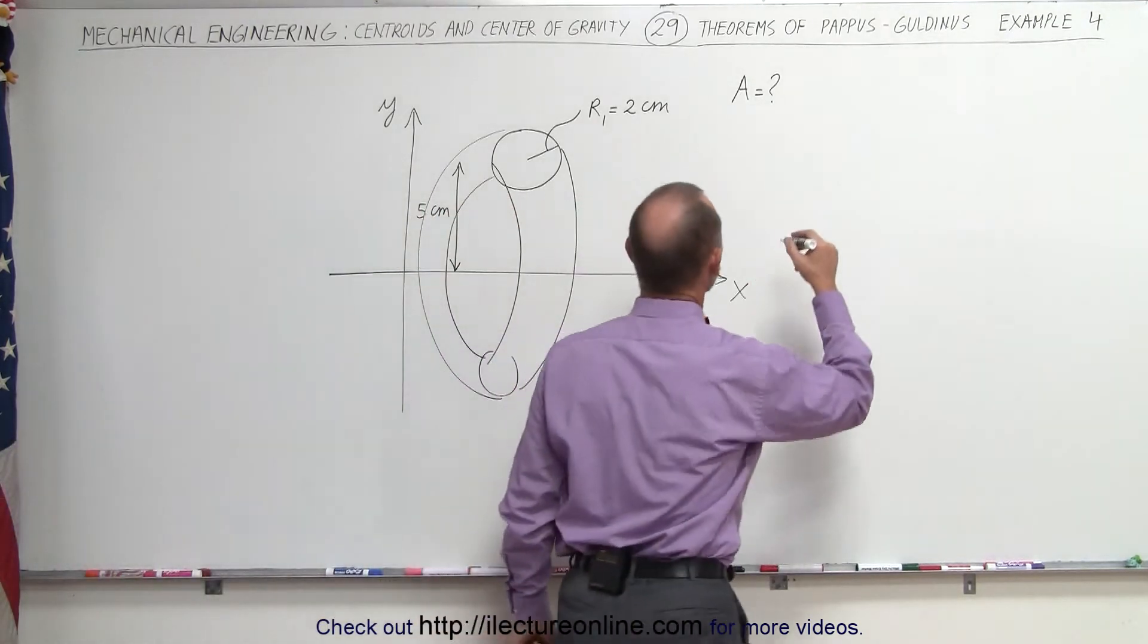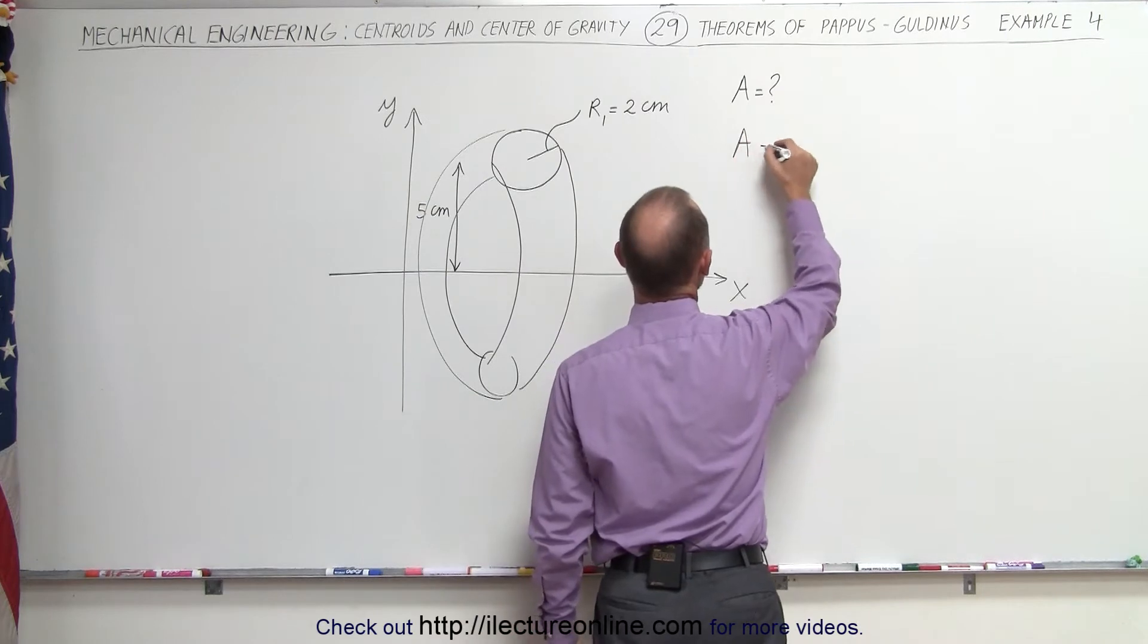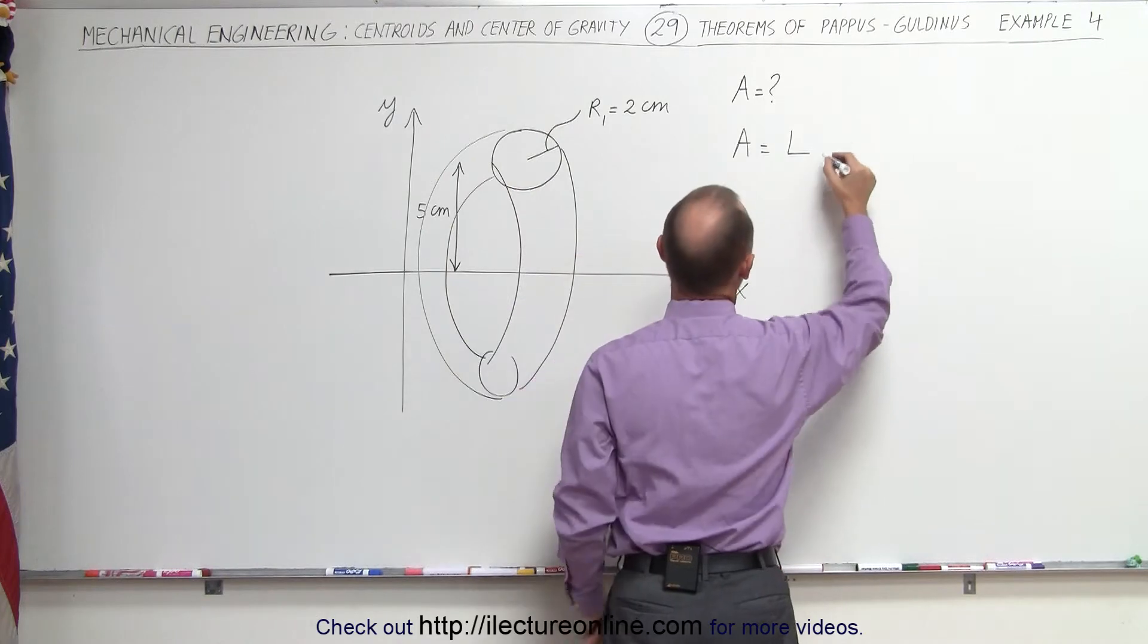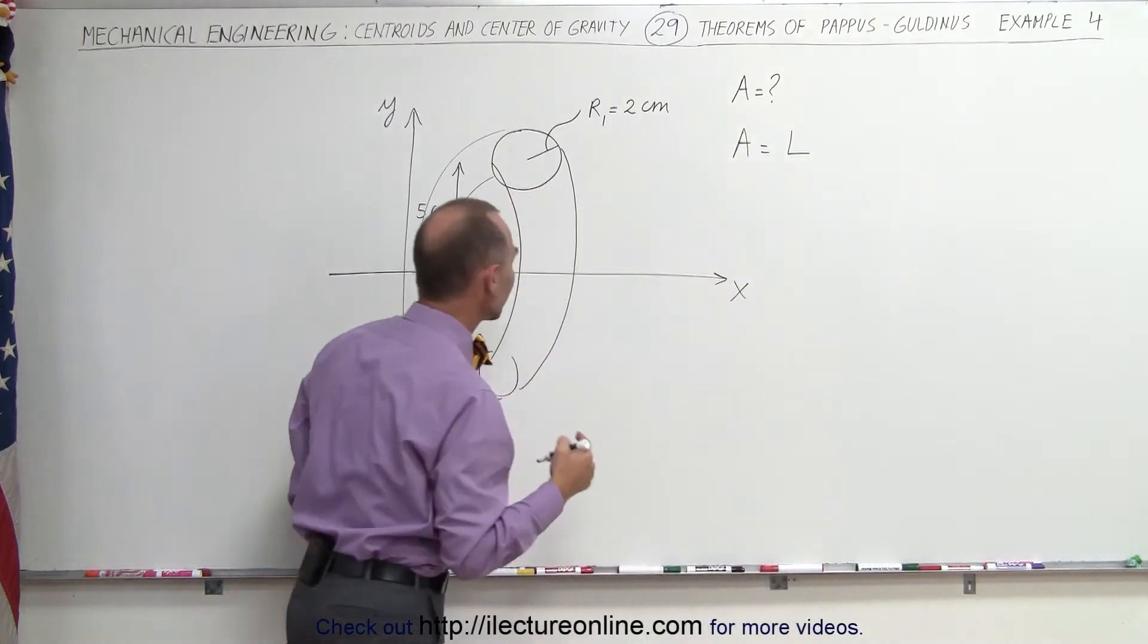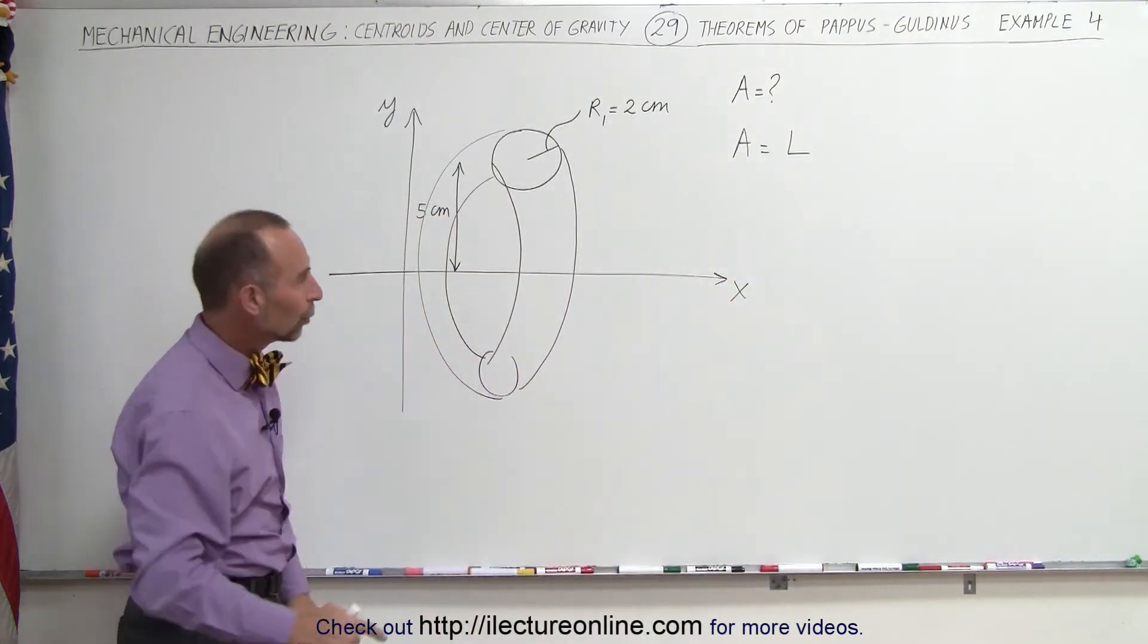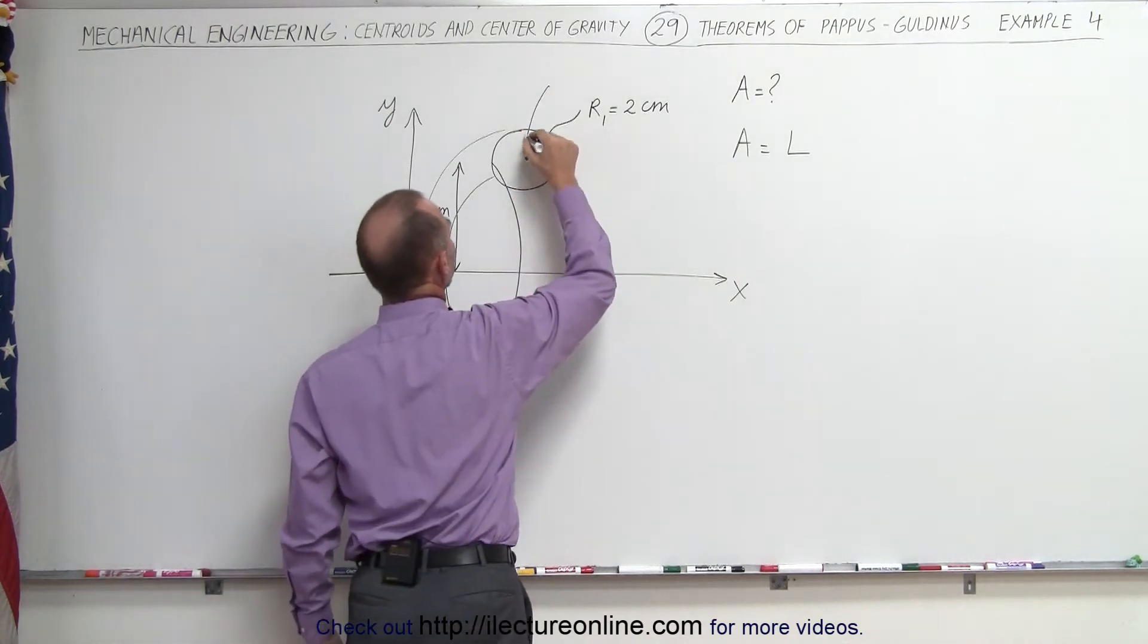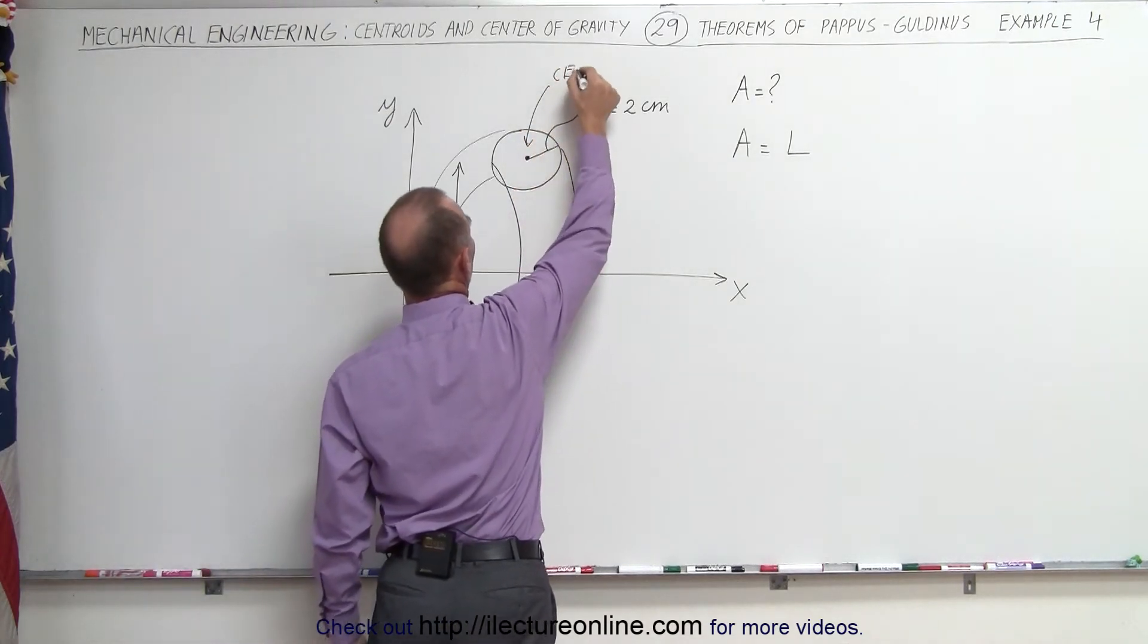The theorem of Pappus-Guldinus says that A is equal to the length of the curve, in this case it's going to be a complete circle, times the distance that the centroid covers as you're rotating about the axis of rotation. This would be the centroid, the very center of that circle.